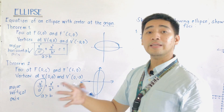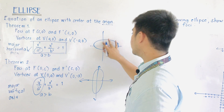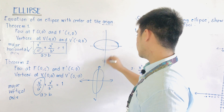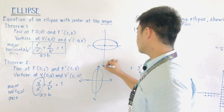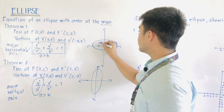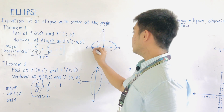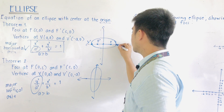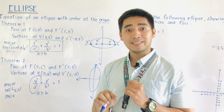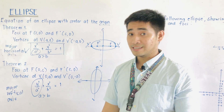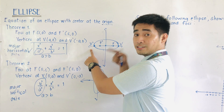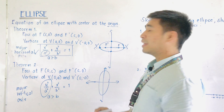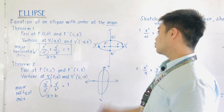For Theorem 1, the foci are located at (C, 0) and (-C, 0). The center is at the origin. Here we have F and F prime on the horizontal axis. The vertices V and V prime are also on the horizontal axis — where the vertices are located is the major axis. The co-vertices W and W prime are on the vertical axis, which is the minor axis.